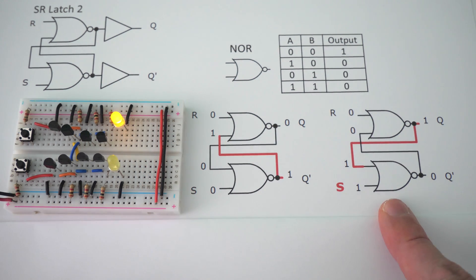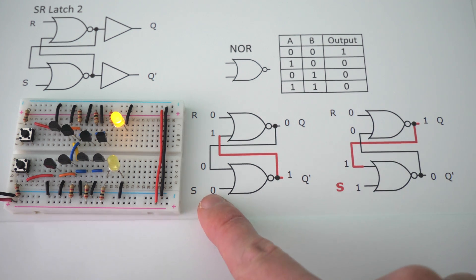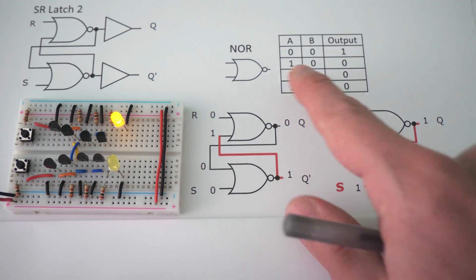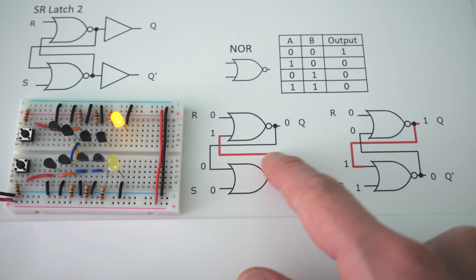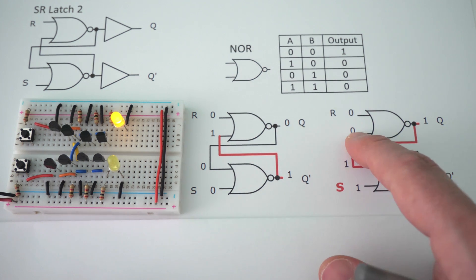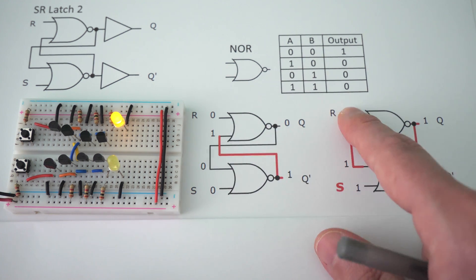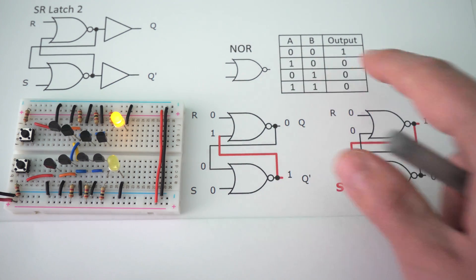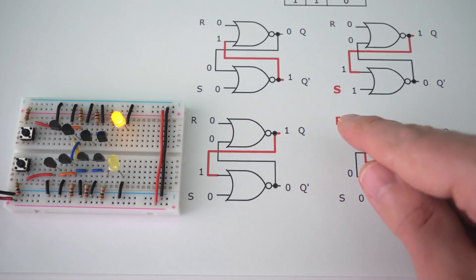When we press set, the output turns on — why does that happen? Previously, the inputs to the bottom NOR gate were both zero, which is why the output was on, because if both inputs are off, the NOR gate output is on. Now one of the inputs is a one, which means the output is going to go to zero — so this output is now off. We used to have one of the inputs at the top NOR gate be on, but now they're both off, so the top NOR gate turns on. That is why our output is now on.